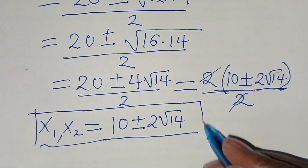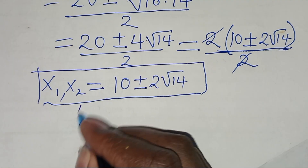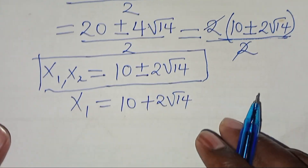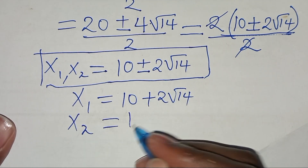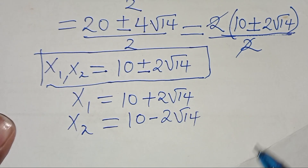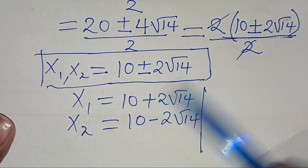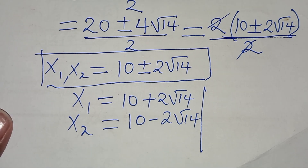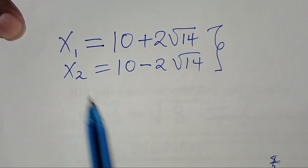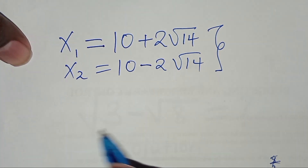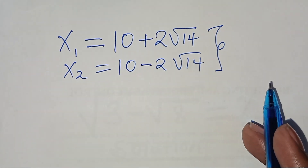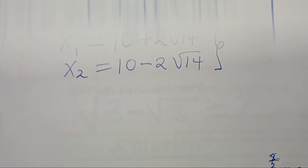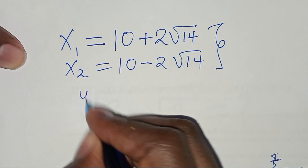So x₁ equals 10 plus 2 root 14, and x₂ equals 10 minus 2 root 14. Now let's determine the corresponding values of y₁ and y₂. Recalling Equation 3, y equals 20 minus x.